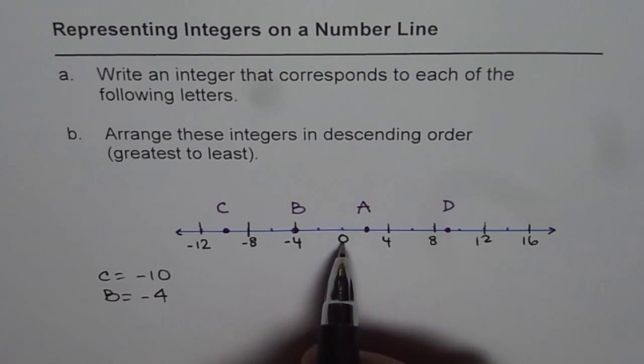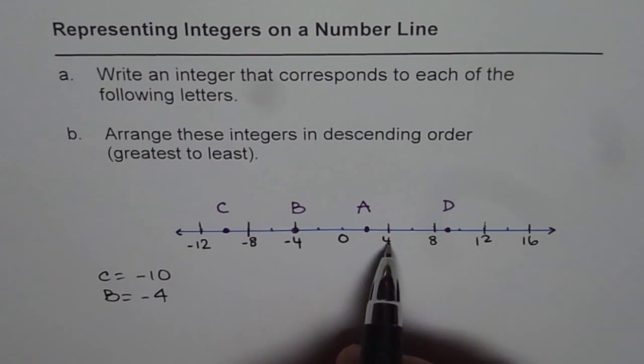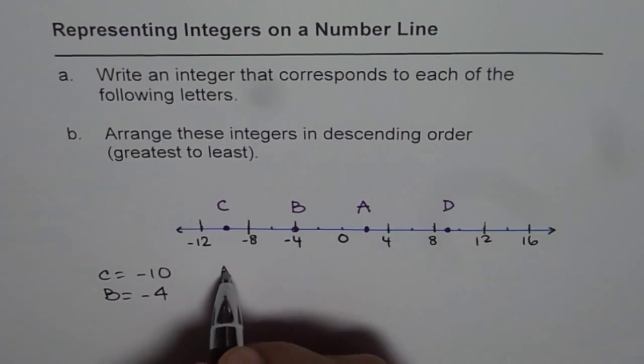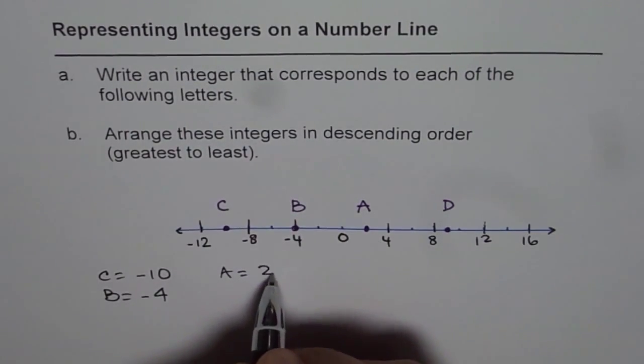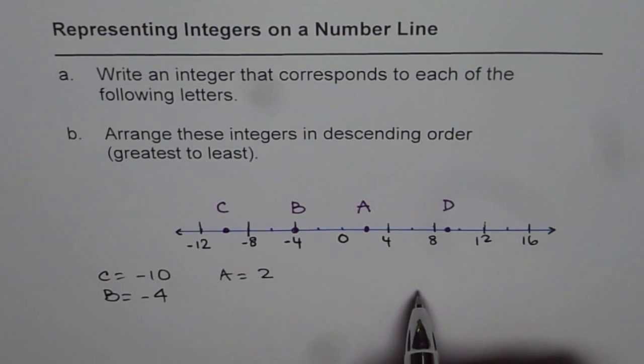A is between 0 to 4, midway between 0 to 4. So A equals to 2 and D is just after 8.